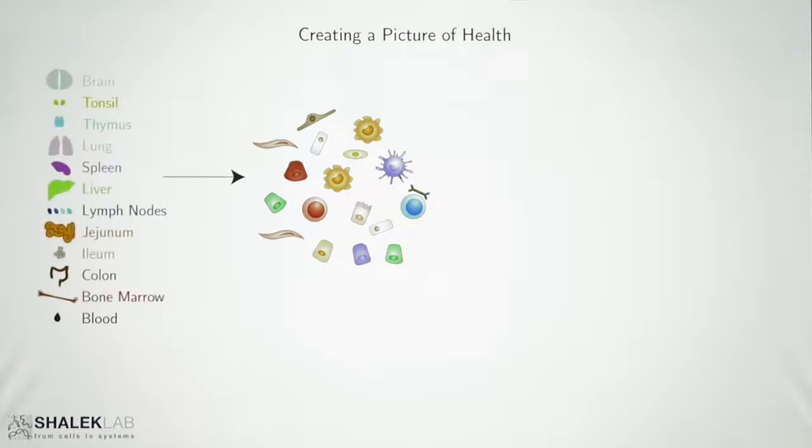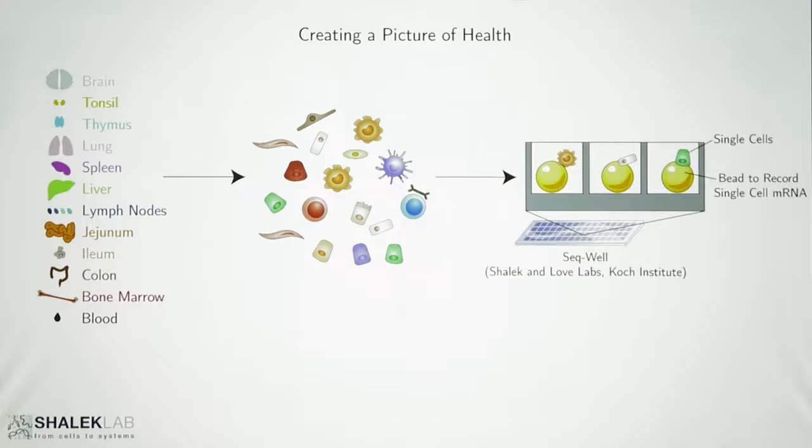We isolated cells from different organs in many different healthy systems. And we analyzed them using a technology that was developed between our lab and the Love Lab here of the Koch, where single cells are trapped with individual beads that are engineered to record the mRNA of each single cell, yielding measurements from thousands of cells at once. And so from our first draft, we've already created data from over 100,000 cells and 20,000 genes.